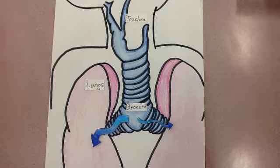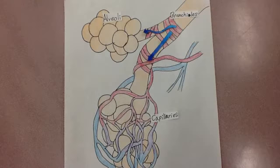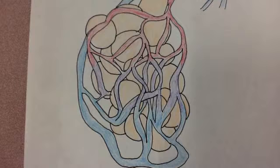Air passes through the bronchi and into the bronchioles. The air travels from the bronchioles into the alveoli, where gas exchange takes place.